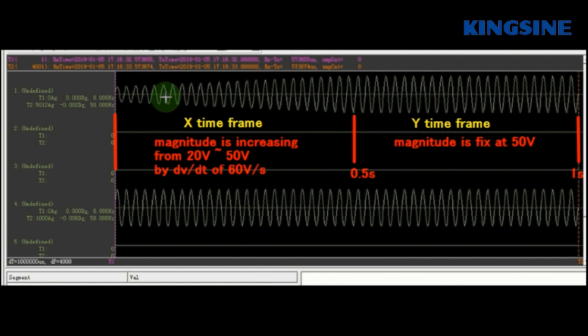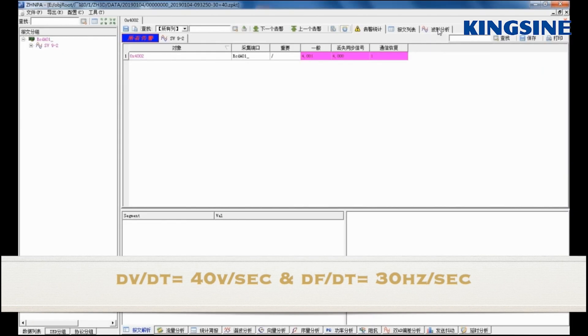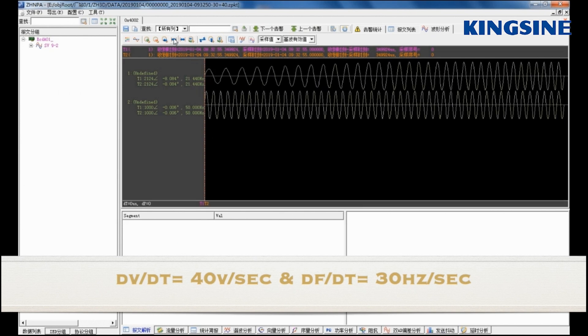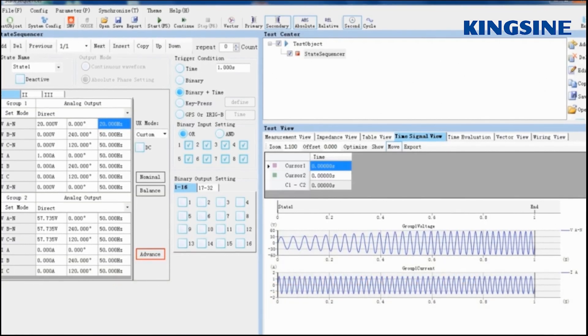In the last simulation, let's try to simulate a voltage signal with DV by DT of 14V per second and DF by DT of 13Hz together. We can observe in sampling value waveform that both the magnitude and frequency of voltage signal are increasing linearly with time.